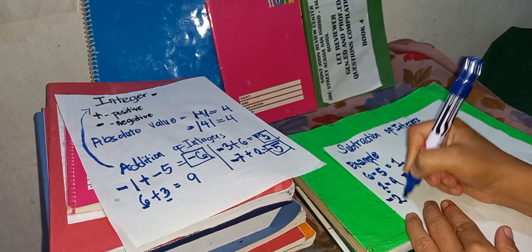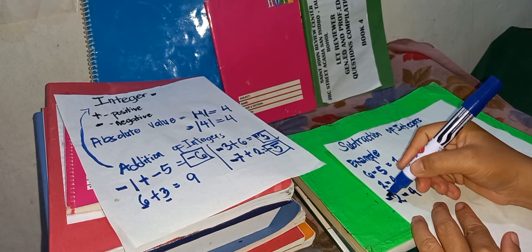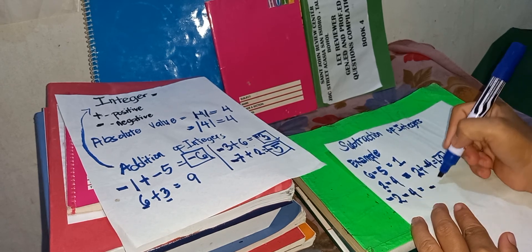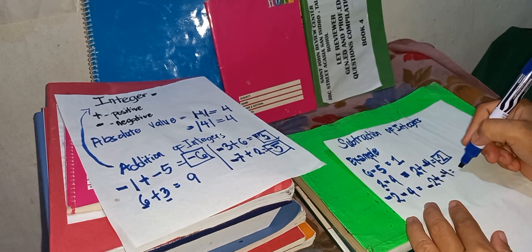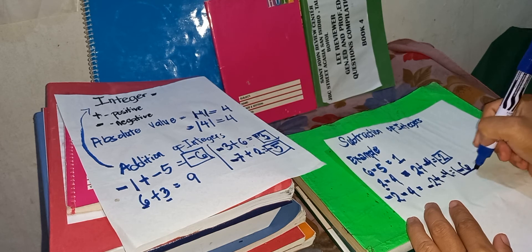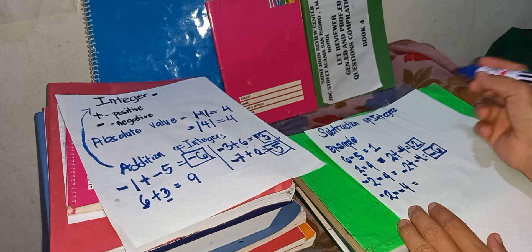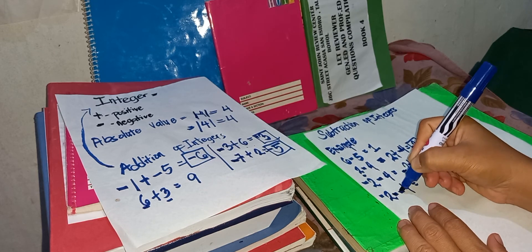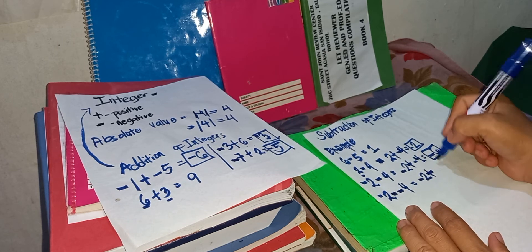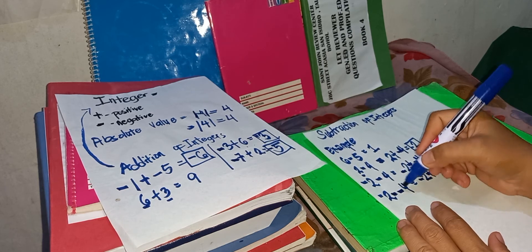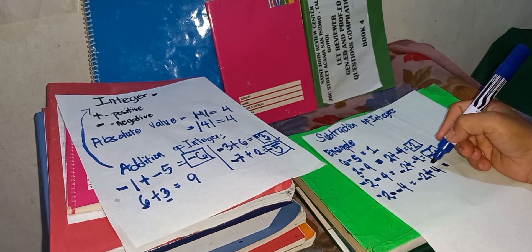Next, two minus four — notice if we convert this into addition: negative two plus negative four. They have the same sign, so we add directly and copy their sign. The answer is negative six. How about two minus negative four? When a minus sign is followed by a negative sign, they become a plus. So two minus negative four becomes two plus four, which equals six.